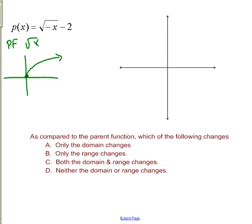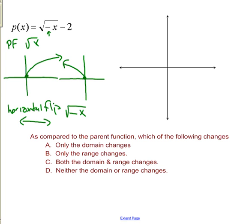Now we identify our transformations in the order we do them — always start at x and work out. The first thing is changing the sign of x, which is an inside function, meaning it's a horizontal flip. Horizontal is this way, so we're flipping over the y-axis, not the x-axis. That gives us square root of negative x. Our second transformation is subtracting two, which is outside, so it's vertical — we go down two. Every point goes down two, and we get this new graph.